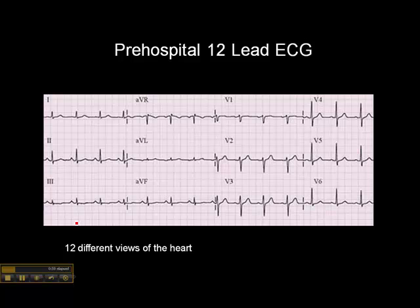When we look at a 12-lead ECG, typically it's in this configuration. There's lead 1, lead 2 below it, lead 3 below that, and then over here is AVR, AVL, and AVF, then V1, V2, V3, V4, V5, V6. This is the standard 12-lead ECG configuration.